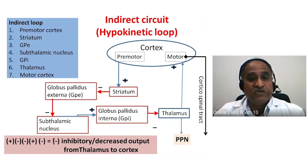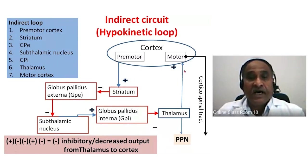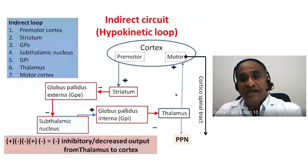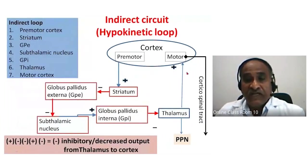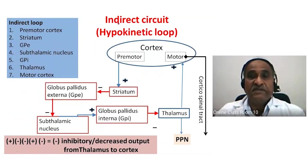The product of all these signs in the indirect circuit is negative — thus the output from the thalamus is inhibitory or hypokinetic. Compared to the direct circuit, where the thalamus-to-cortex arrow was thick, here the arrow is thin, indicating fewer or less excitatory impulses reaching the cortex. This is the inhibitory or hypokinetic loop.